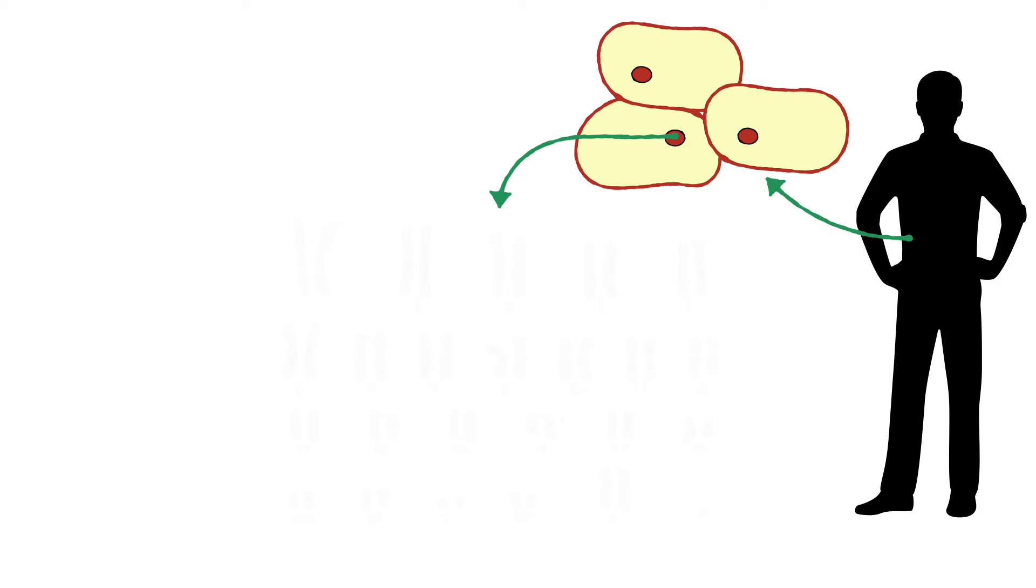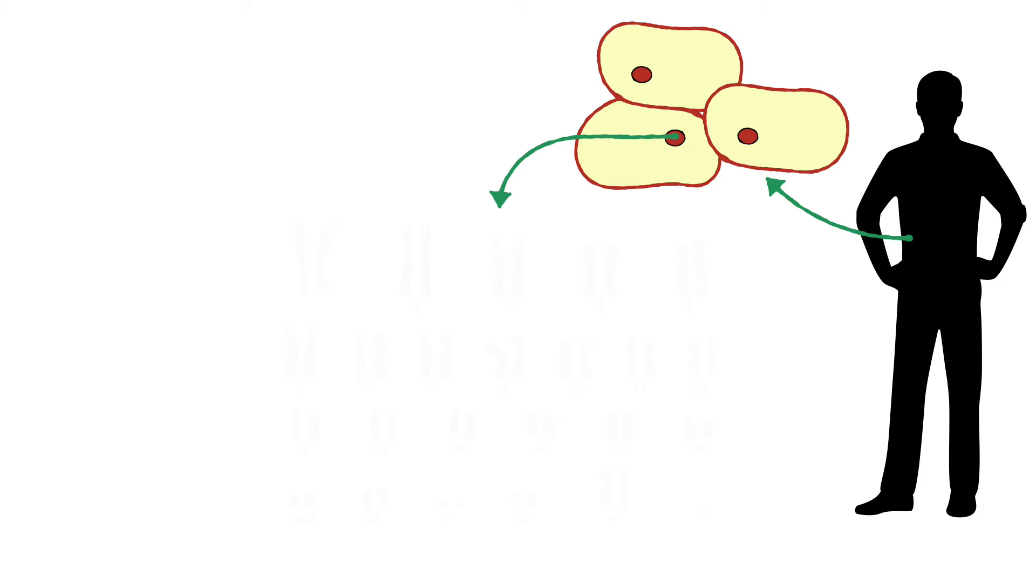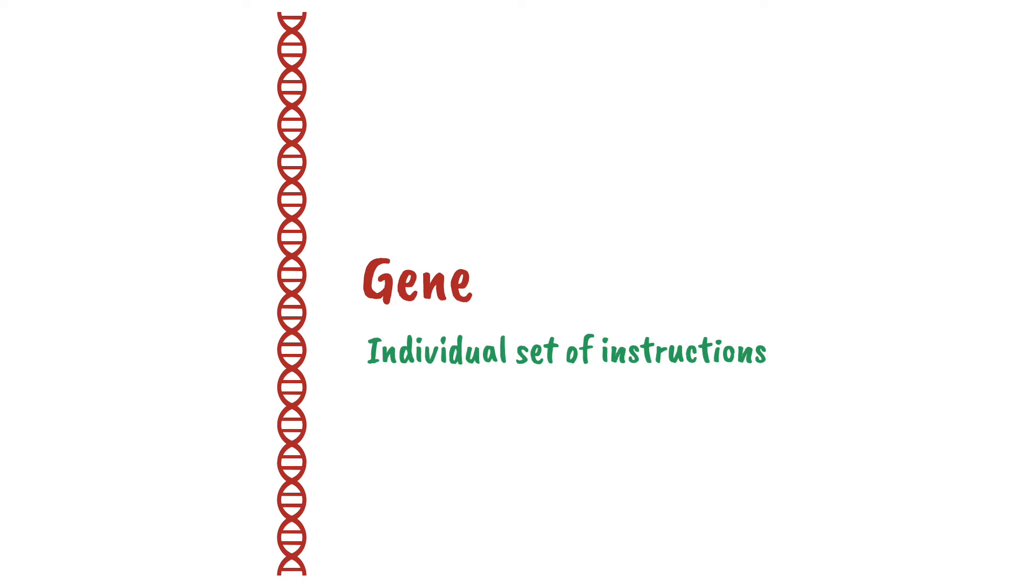Inside all your cells, like the cells of all living organisms, is DNA. This DNA contains the instructions for a whole range of features that make up an organism. Each segment of DNA, that is, each individual set of instructions, is called a gene.